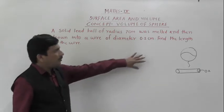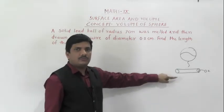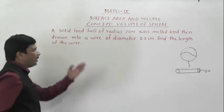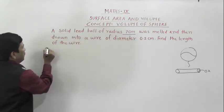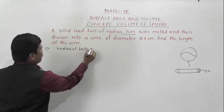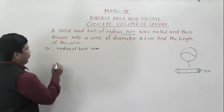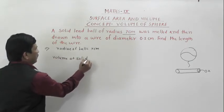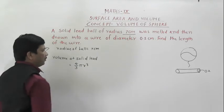We need to find out the volume of the sphere and then compare it with the volume of the cylindrical wire. A solid lead ball of radius 7 centimeters is given — radius of ball equals 7 centimeters. Now we are going to find out the volume of the solid lead ball, which equals 4/3 × π × r³. That is 4/3 × π × r³.